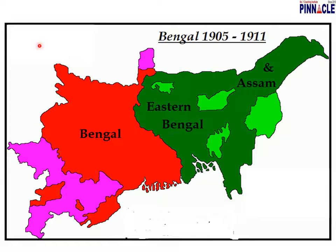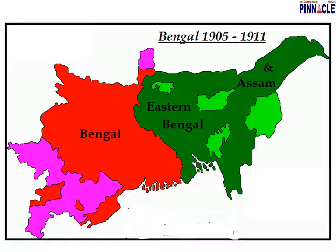Bengal around 1900 covered Bihar, Orissa, current-day West Bengal, Assam and all northeastern regions, and the whole of present-day Bangladesh. The British argued it was too huge a unit to administer with 78 million people — a quarter of the population of British India. Though this was true to a certain extent, they had real hidden motives behind the partition which we will cover next.